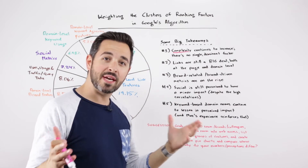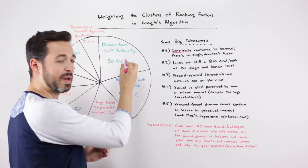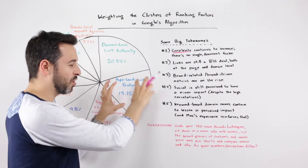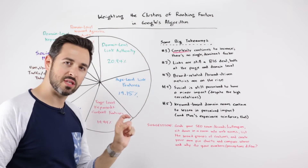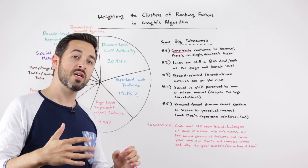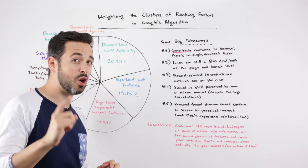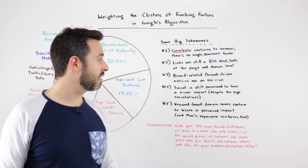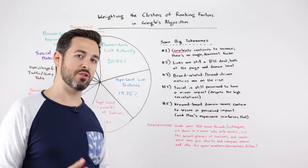Number two: links are still a big deal. What we're essentially seeing here is domain-level link authority and page-level link features combined — you could think of this as page authority and domain authority as proxies. That's still a good 40% of how SEOs are perceiving Google's algorithm. Links being a big important portion, but not the overwhelming portion — it has almost always been the case in years past that link features combined were 50%. So we're seeing that they're a big deal on both the page and domain level, just not as overwhelming as they used to be.